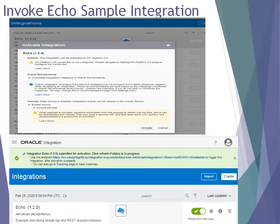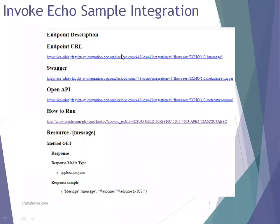You can activate the integration by enabling tracing and enabling the payload. Once you click activate, it shows an icon in front of the integration. Click on that icon and by default it provides a URL at the top, saying this is the URL using which you can find out the request and response payload information for your REST integration. Click on it and you can see the total information about your integration, including the endpoint URL — while invoking this particular REST web service you have to mention this URL and pass the parameters to get the expected response.